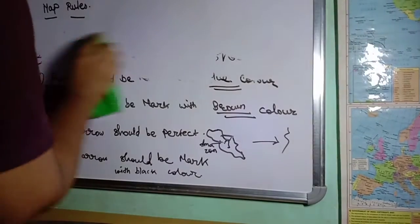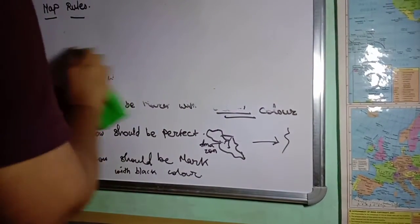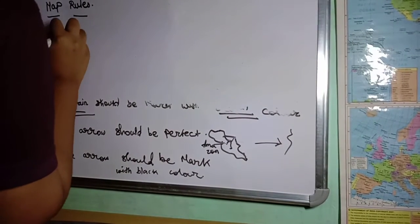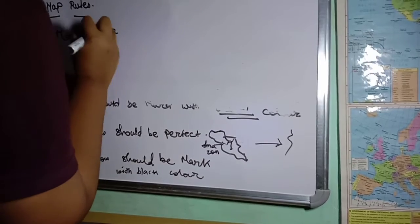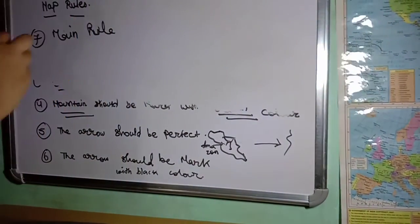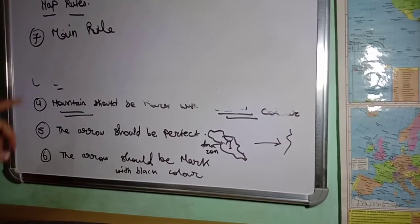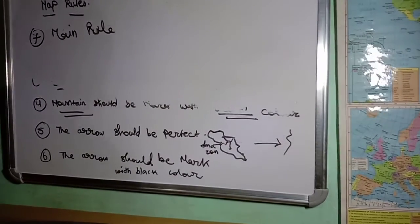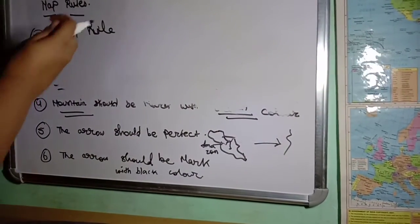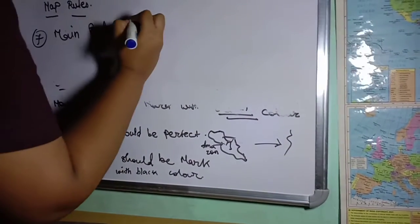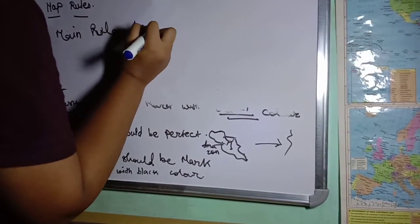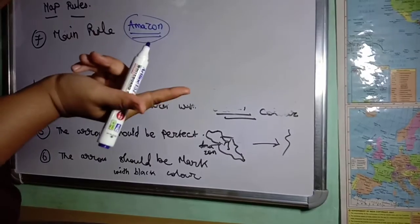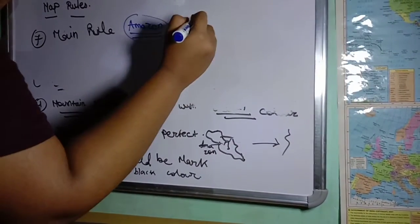Seventh and main rule: when you write a label — like the name of a river — you must write it in block capital letters. Do not write with only the first letter capitalized and the rest small. That will cut your marks. Always write in full block capital letters.